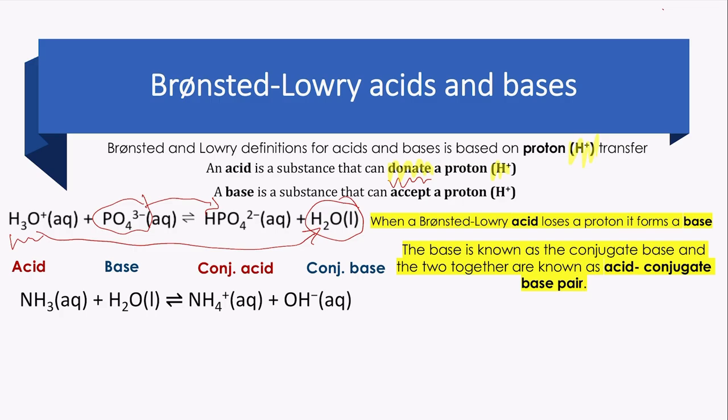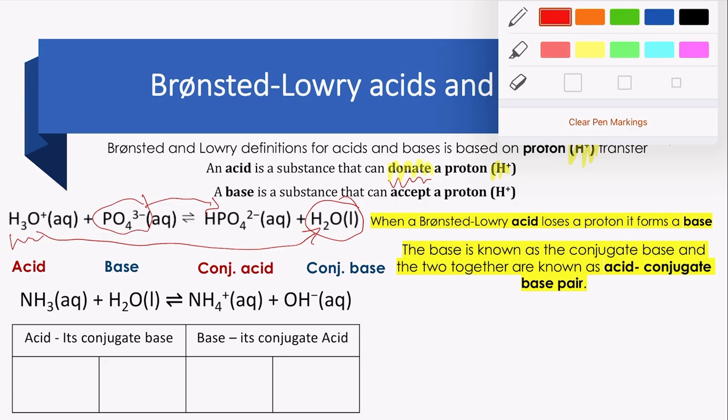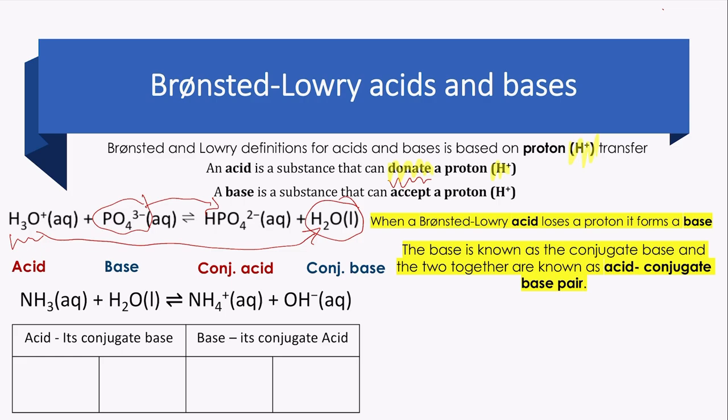Let's check another example. We have NH3 plus H2O producing NH4+ plus OH-. We would like to highlight what is the acid, what is the base, and their conjugate base or conjugate acid. First, check NH3. What has happened to NH3? I cannot just say that NH3 is acid or base from looking at the reactant. We have to check what has happened to NH3.